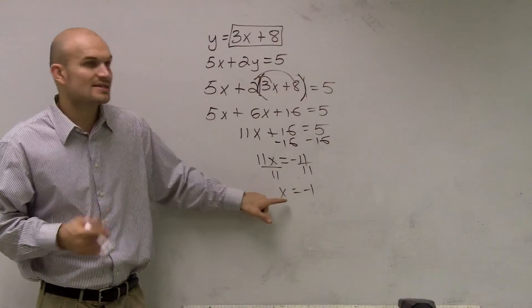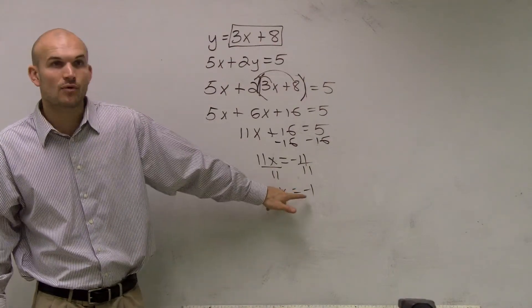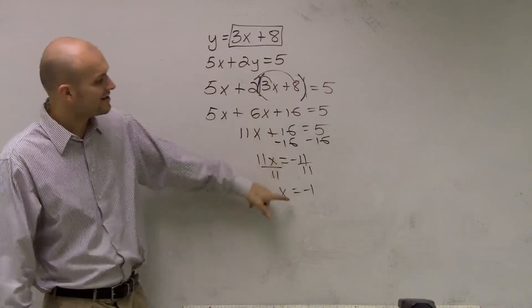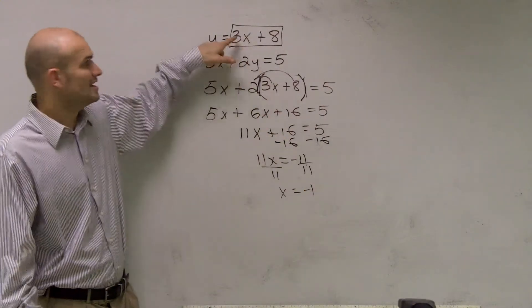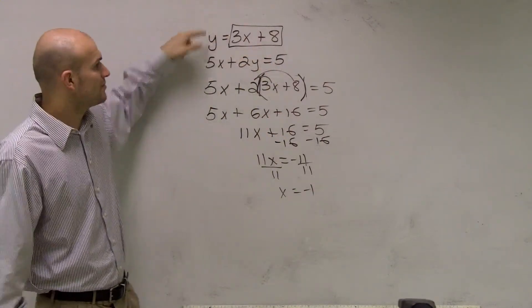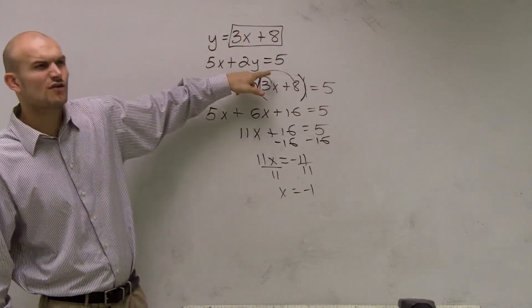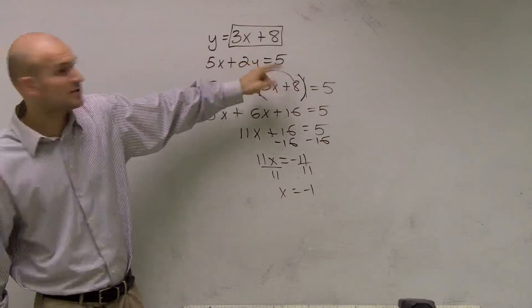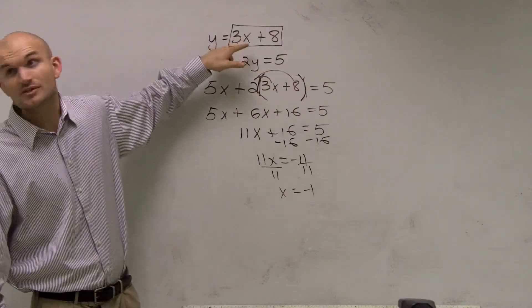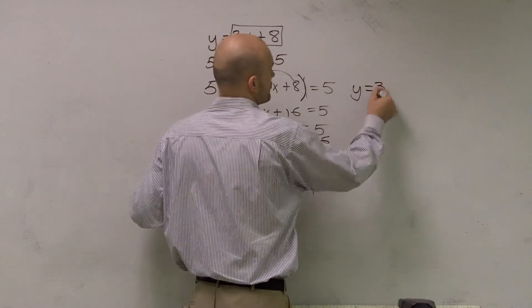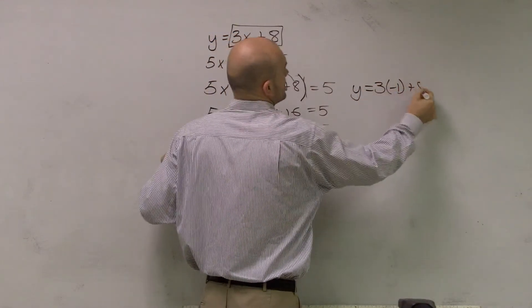So what I can do is now I know that x equals negative 1. So all you need to do is plug negative 1 in for your x value. Now, you can plug it into either equation. But if you plug it into this one, you're going to have to solve for y again, which I don't really want to do. It's much easier just to plug it into this one because y is already solved. So I'll say y equals 3 times negative 1 plus 8.